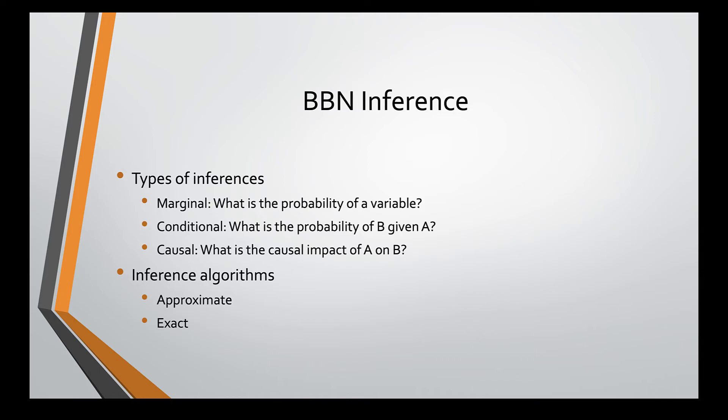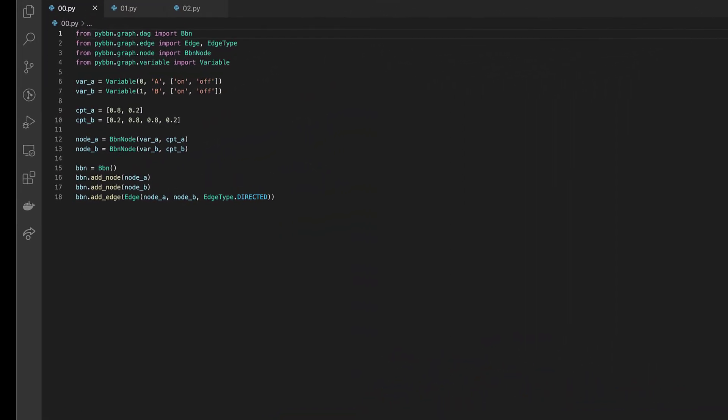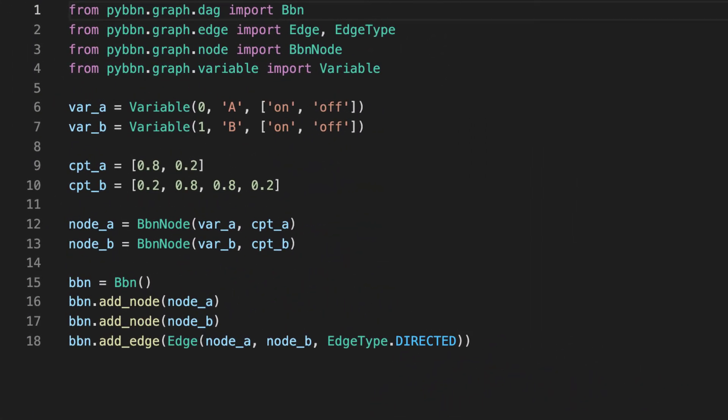Let's see how we can use PyBBN to create a Bayesian network, and then query for the state of the variables with and without evidence. Let's see how we can create a Bayesian network. This Bayesian network is very simple. There are only two nodes, A and B, where A is the parent of B. These nodes are also binary, having only two states, on and off.